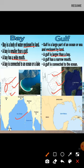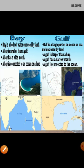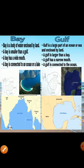Another difference is that a gulf has a narrow mouth, meaning it has a small opening, whereas a bay has a wide opening. A gulf is connected to the ocean, and the Gulf of Mexico is one example — it is the largest gulf in the world.